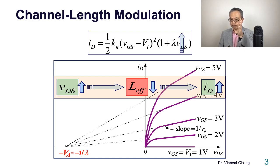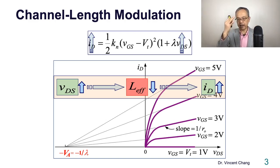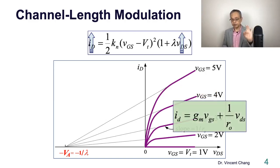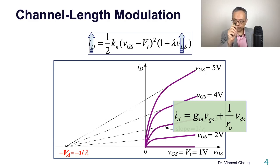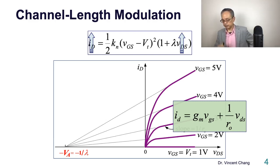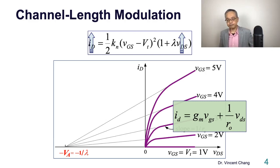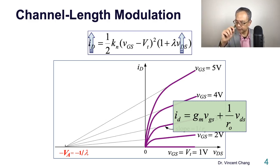How quickly ID goes up with VDS will be described by lambda, called the channel length modulation parameter. The large signal equation is on top. The small signal AC equation below becomes linear. The first term is what you learned from the previous lecture — it's the transconductance, Gm·VGS. Because ID is now affected by two variables in the large signal, we similarly create a second contribution in the AC, coming from VDS.